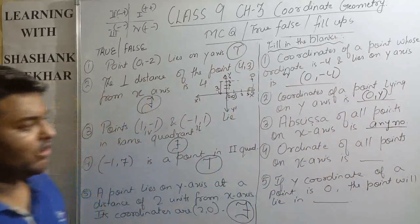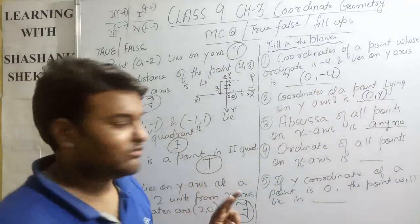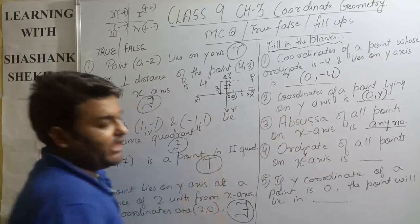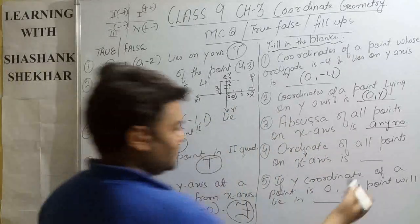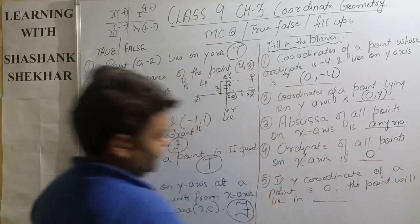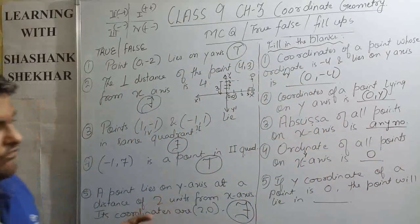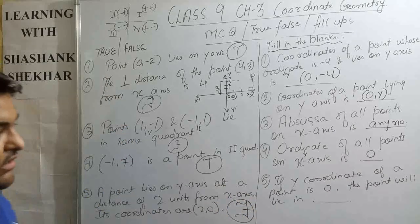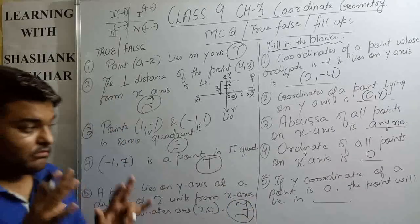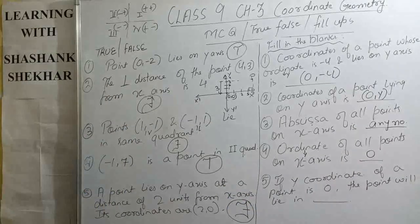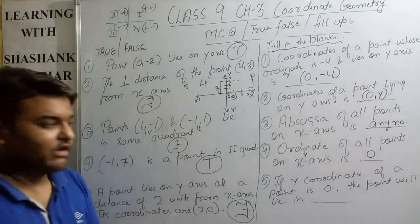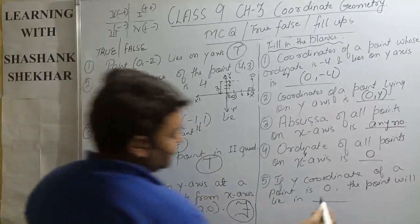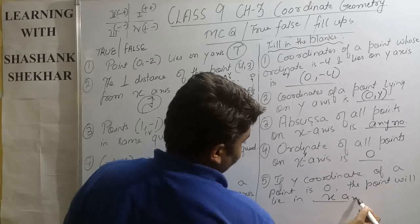Ordinate of all points on the x-axis: the y-coordinate of any point on the x-axis is equal to 0. So if the y-coordinate of a point is 0, the point will lie on the x-axis. Remember: on the x-axis, y equals 0; on the y-axis, x equals 0.